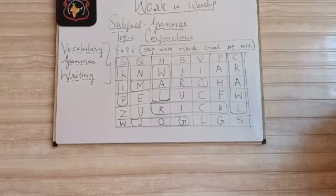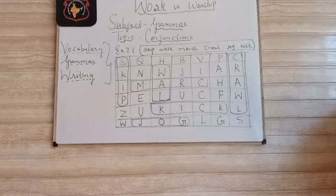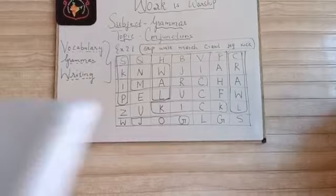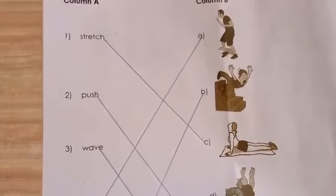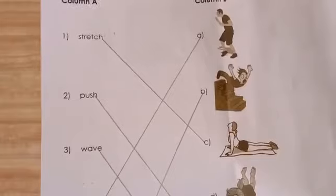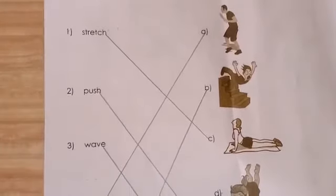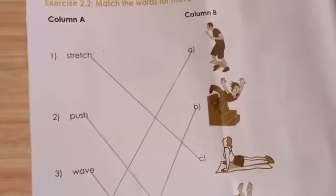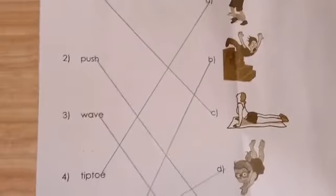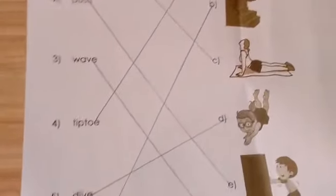Now we will do Exercise 2.2 — match the following. You will match the words with the movements shown in the given pictures by joining lines. The words to match are: stretch, push, wave, tiptoe, dive, and trip.